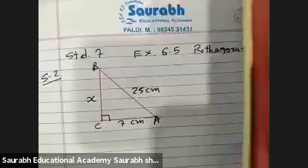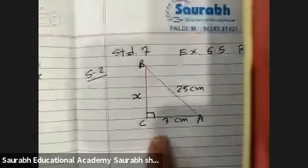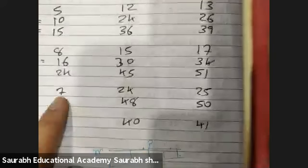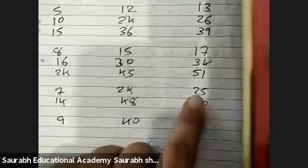We assume BC equals X. Now, as soon as you see 25 and 7, if you have learned this table, you will definitely recognize the numbers 7, 24, 25.